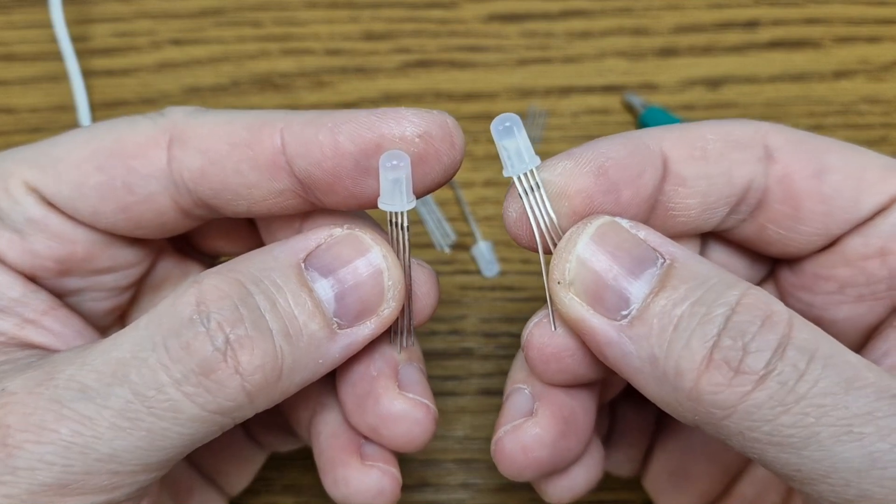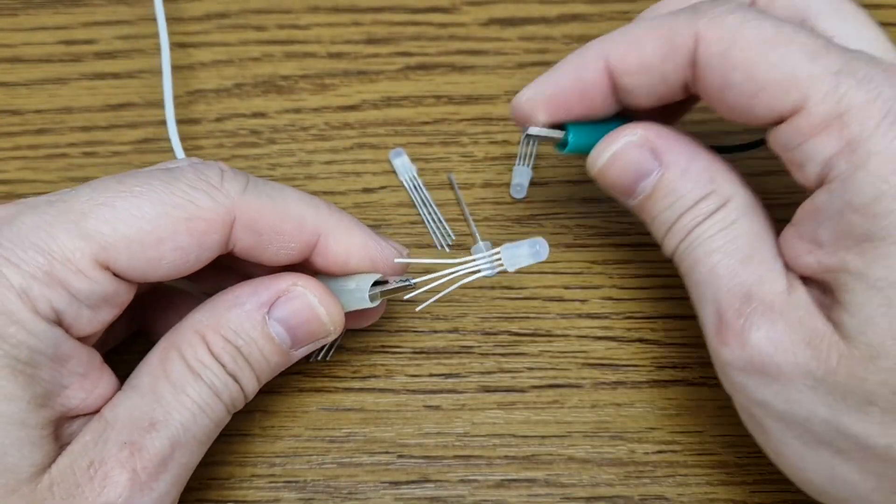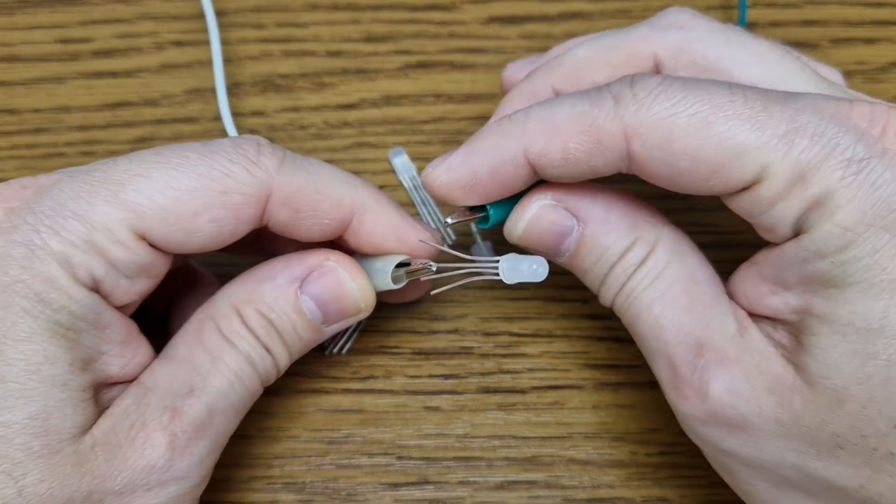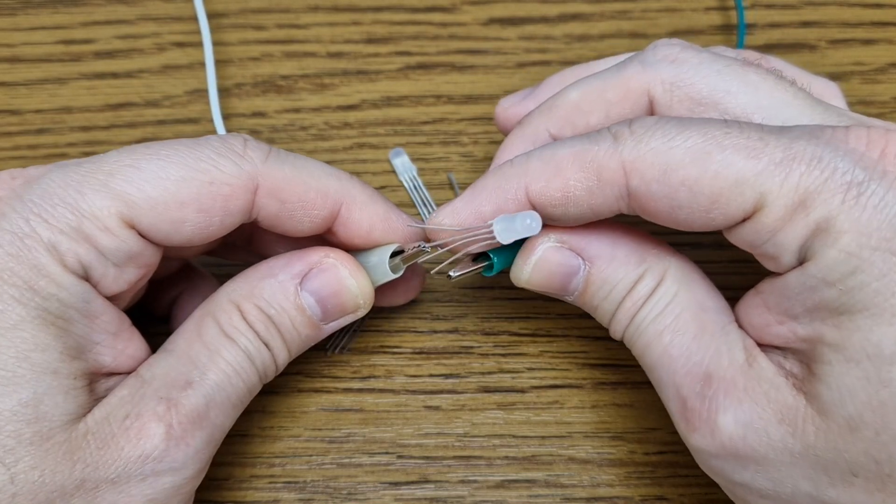To illuminate the plexiglass panel, I will use these 5mm diffused LEDs. They have a common cathode and 3 colors, so you can use them for different types of signs.